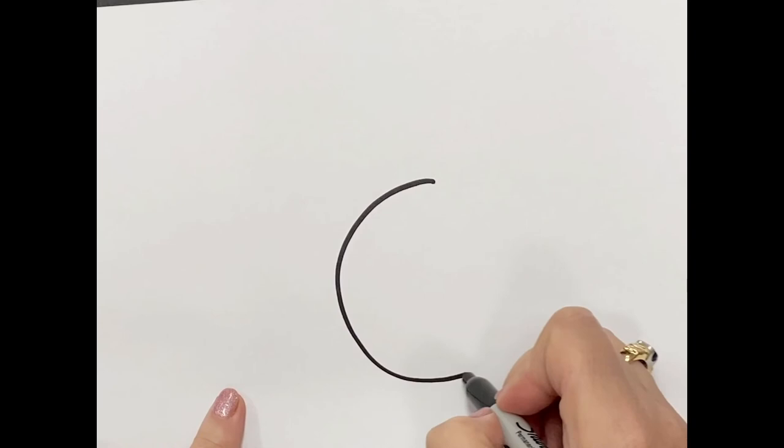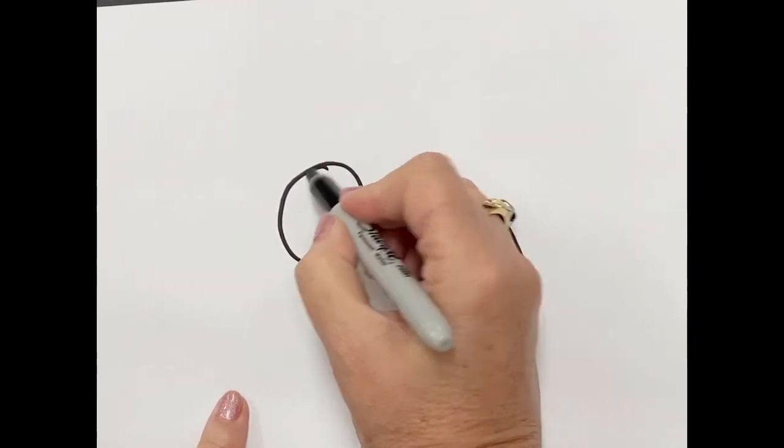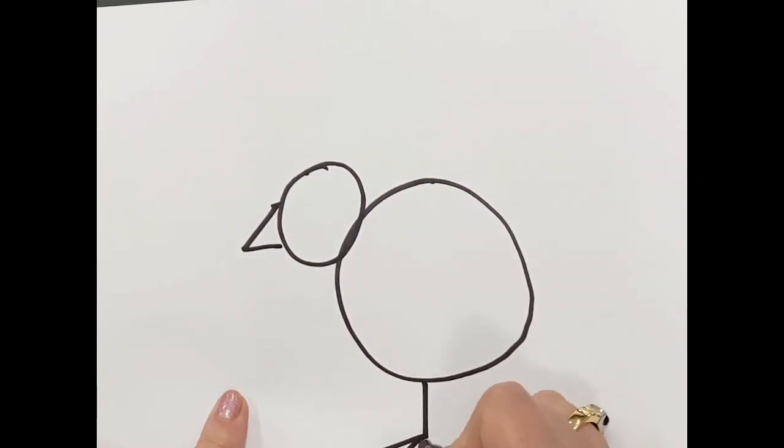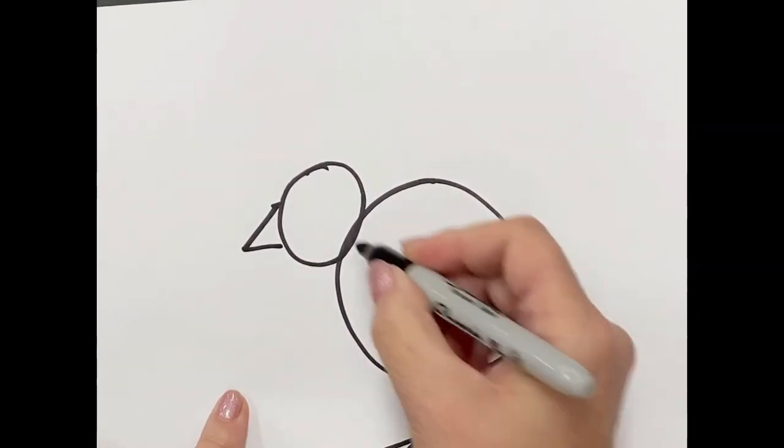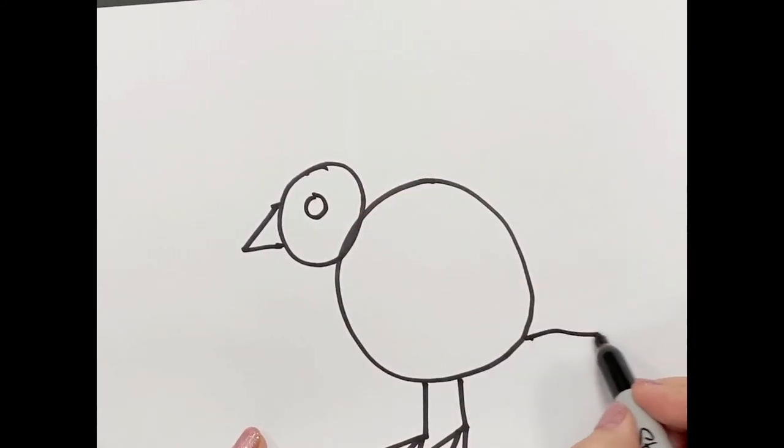So I start with a big circle and then I add a smaller circle for its head and a triangle for its beak. Give it some little spindly legs. And one thing I forgot to do here was add wings, but I did add them towards the end.